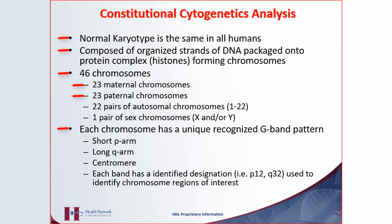Each chromosome has, like I said, this unique recognized G-band pattern. We have a short arm and a long arm. The top of the chromosome is called the short part — the short P-arm, P for petite. And the long arm is called the Q-arm. The centromere is where they are bound together — the P and the Q. Each band is identified with a designation, like p12 or q32, which we use to identify specific regions. So if you want to know where a gene is, we would say the gene is located at a specific band designation.